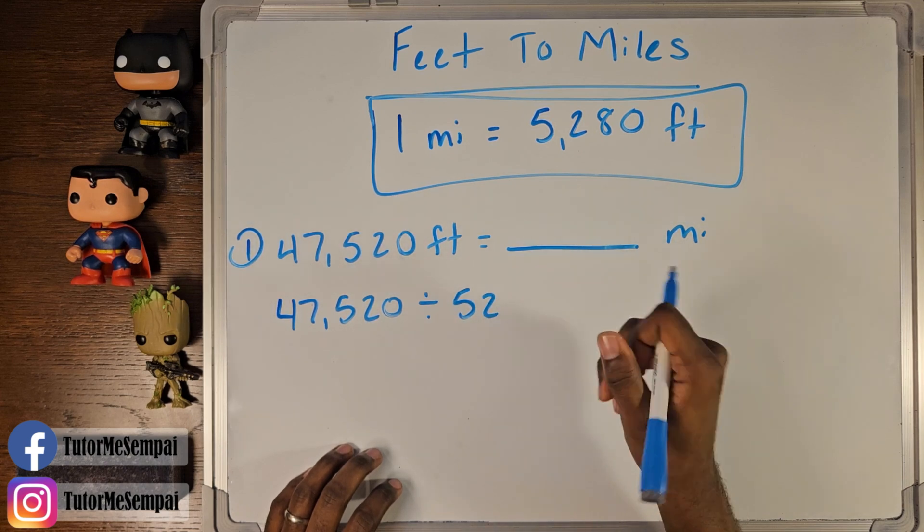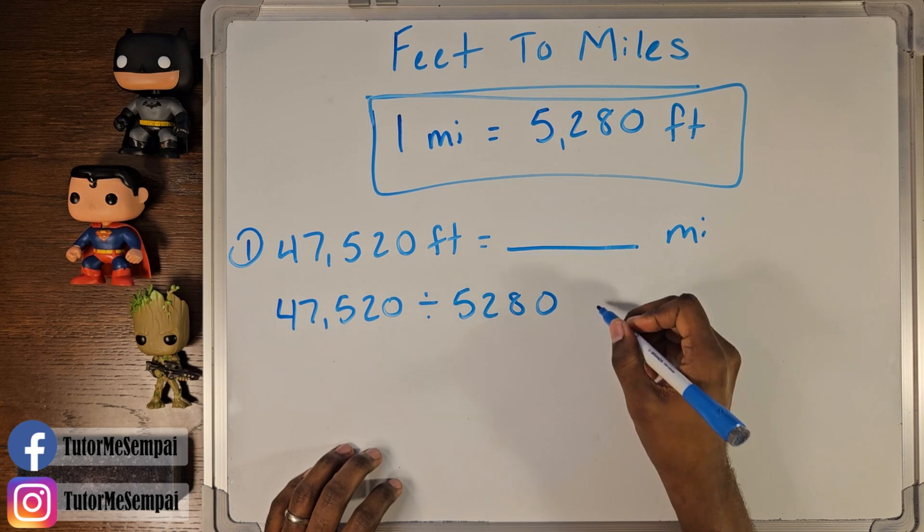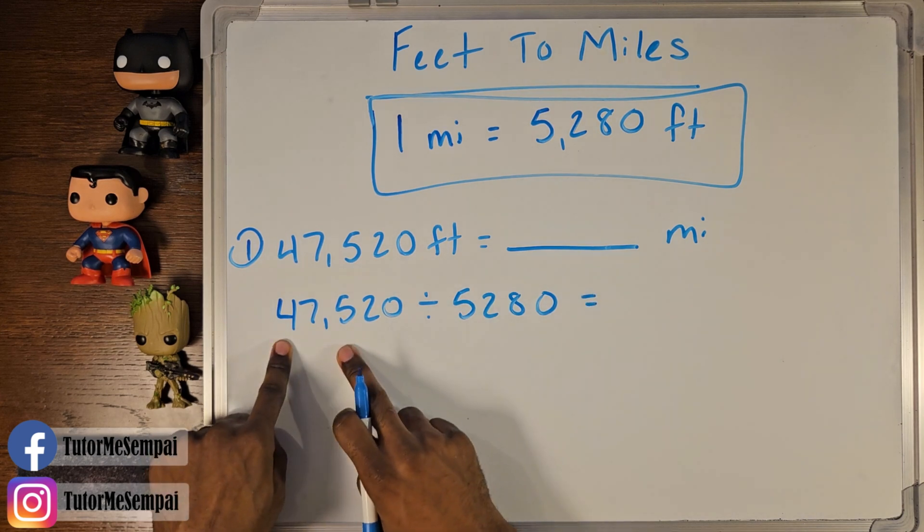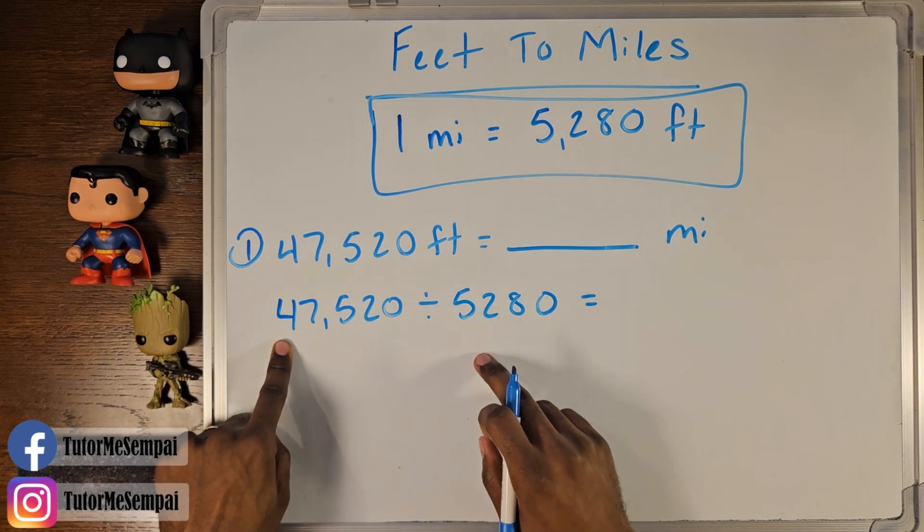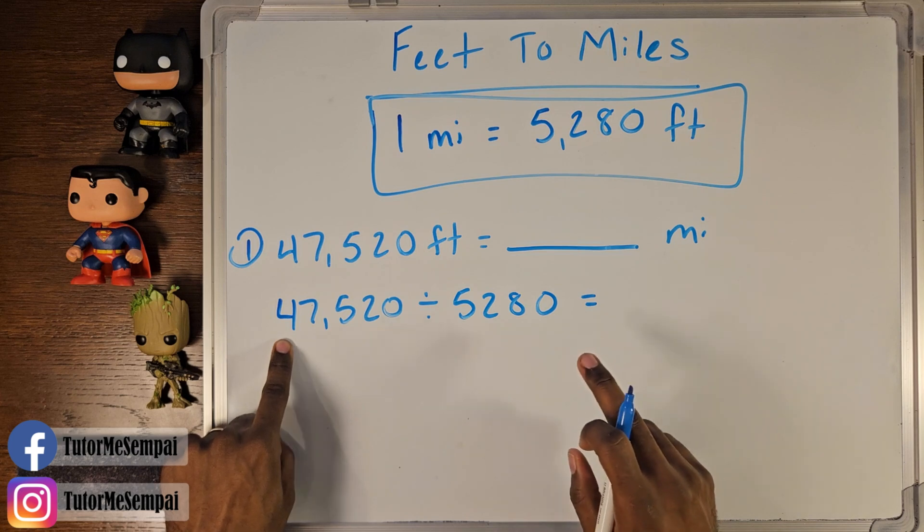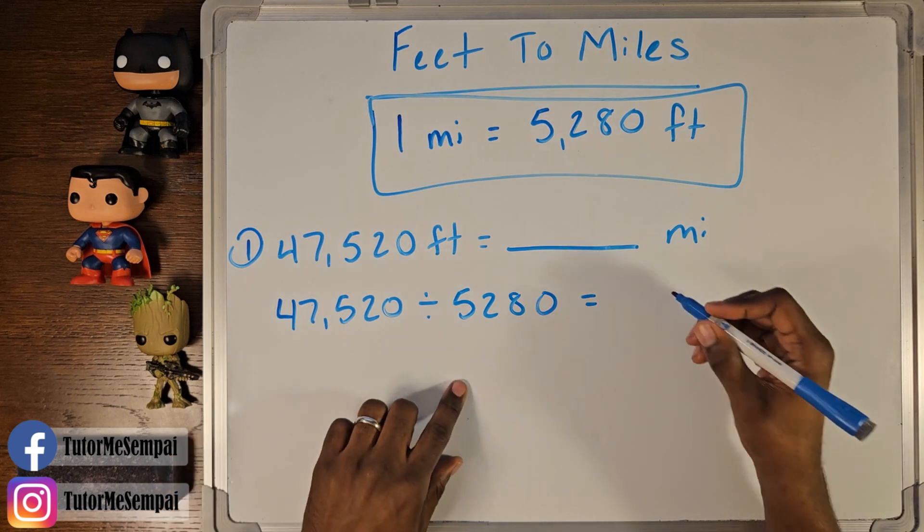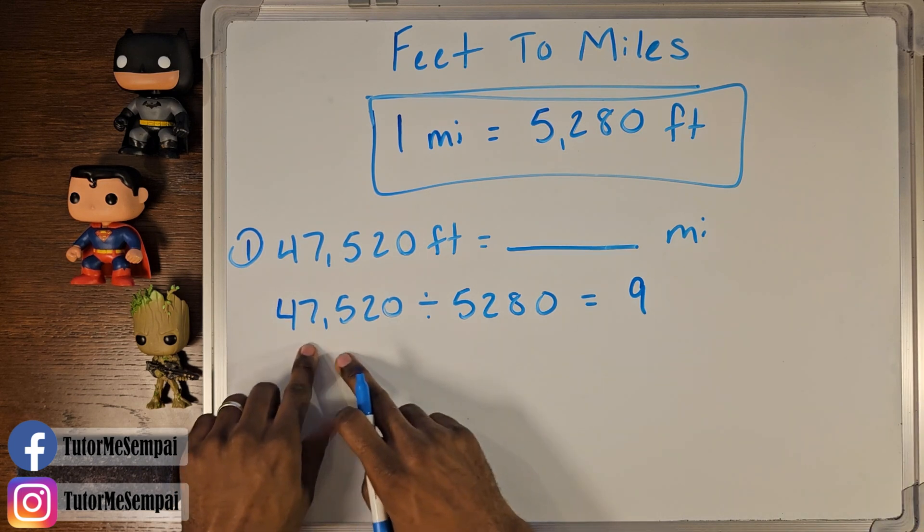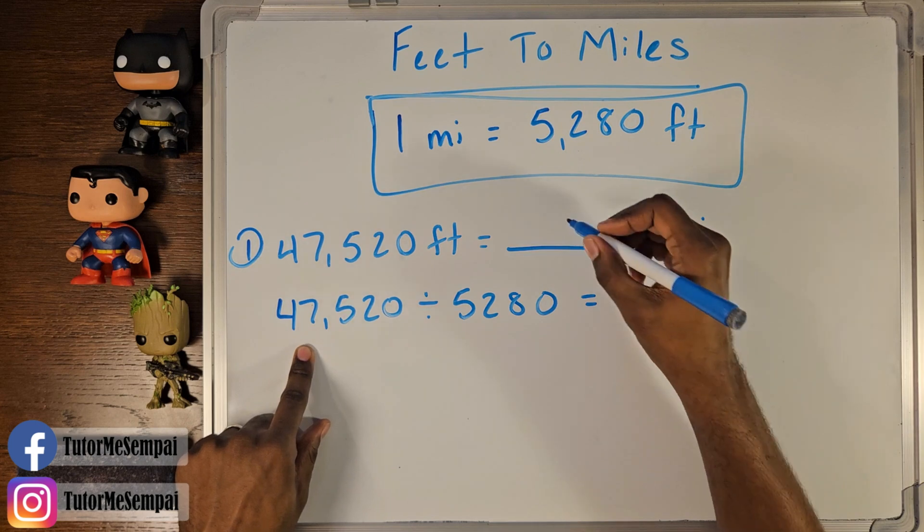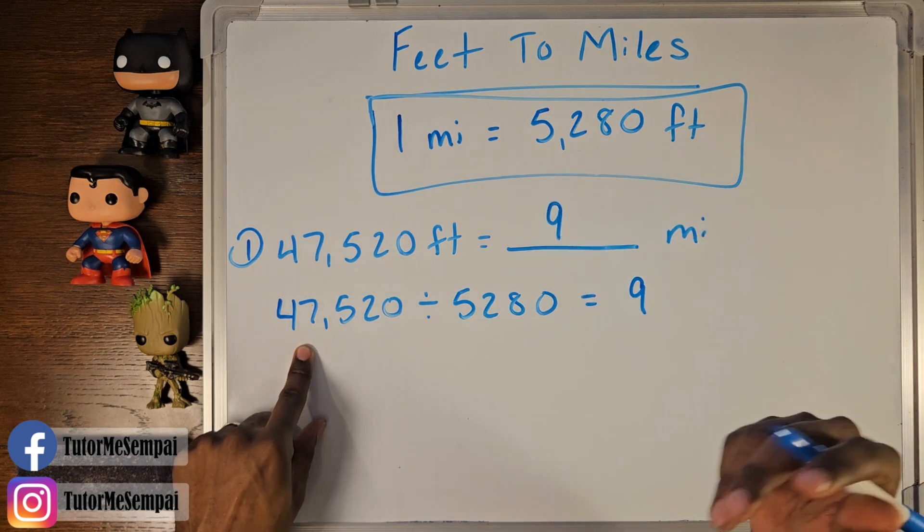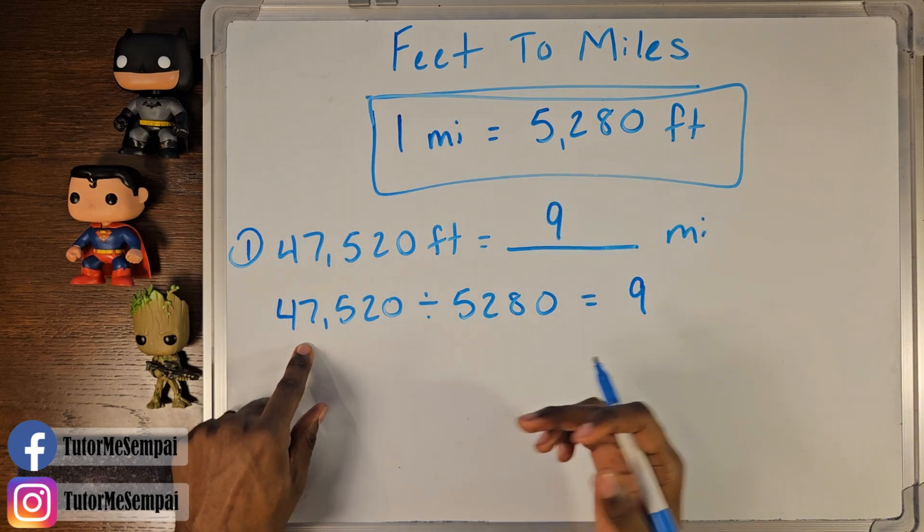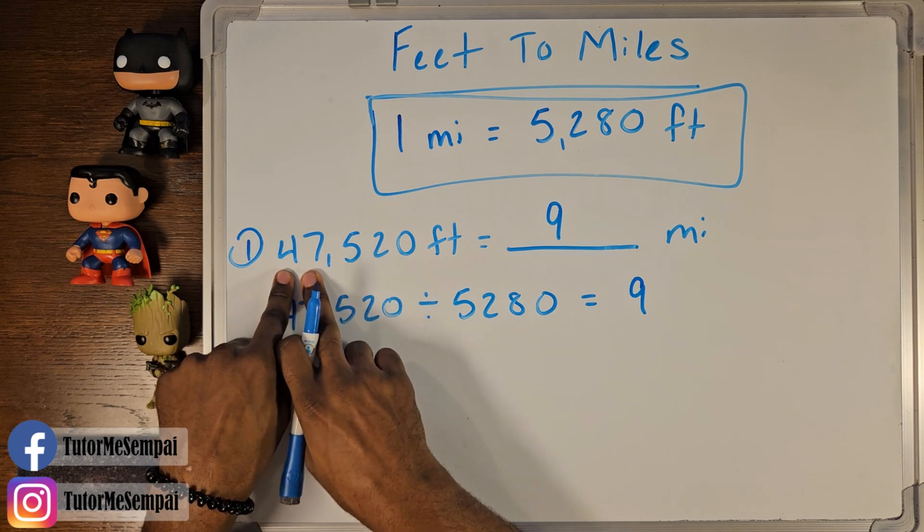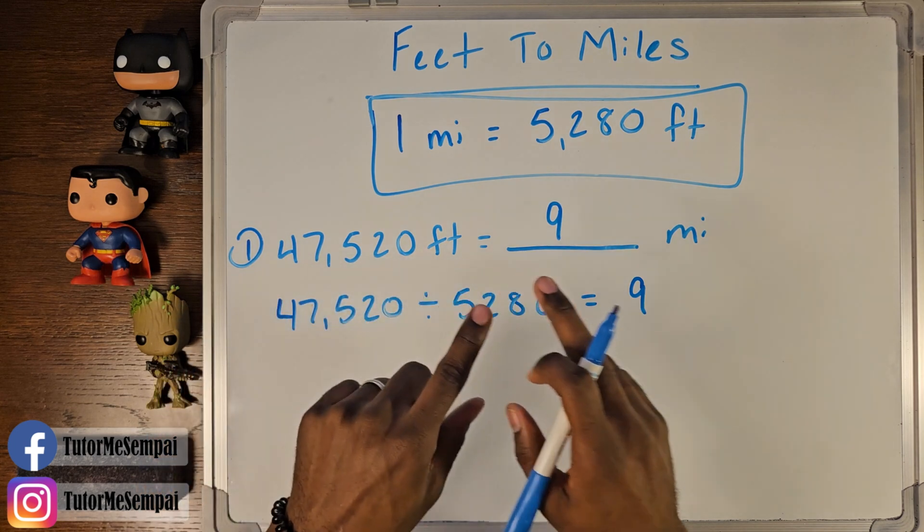Dividing 47,520 by 5,280. Once you do this, you'll see that the answer is going to be quite simply nine. Nine is going to be the result of this division, which means that nine is going to be the amount of miles we have when we have 47,520 feet.